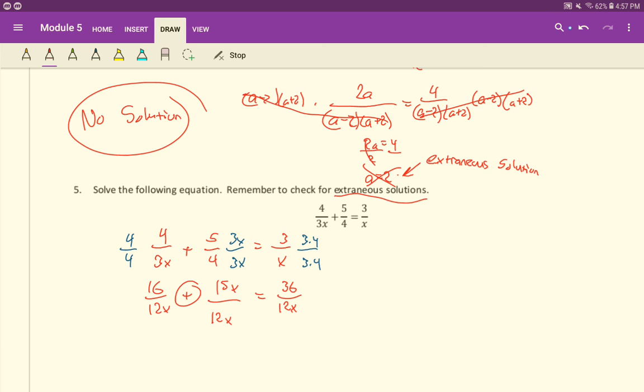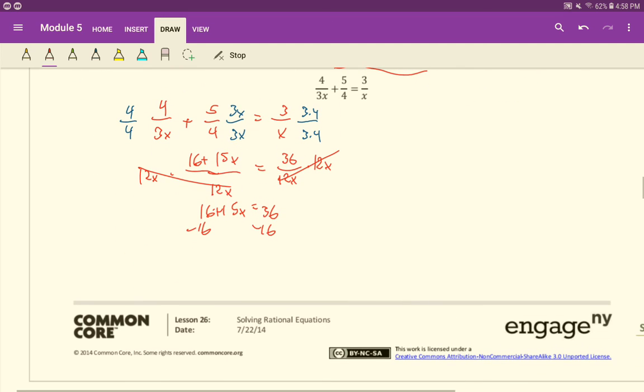And again, we can now add these two fractions together because they have that common denominator. So I'm just going to do that here. So it'll be 16 plus 15x over 12x. And now we can eliminate that 12x by multiplying both sides by 12x. So we'll cancel that and cancel that out. We have 16 plus 15x equals 36. And we'll just solve. Subtract 16 on both sides. You get 15x equals 20. Divide both sides by 15. And we get x is four-thirds. And there's our answer.